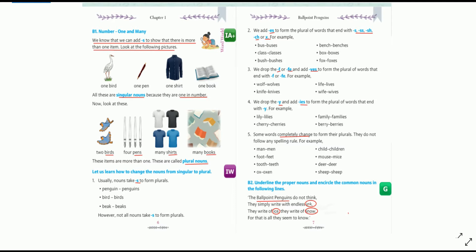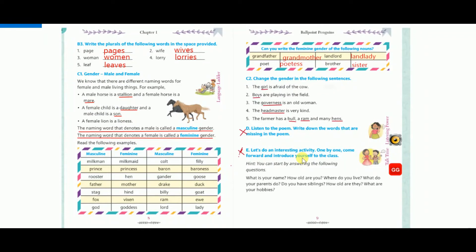Now let us come to page number 8, question B3: write the plurals of the following words in the space provided. Number 1 — page: the plural of page is pages, P-A-G-E-S; we just add S at the end. Number 2 — wife: wife ends with FE, so according to the rule, we drop FE and add VES. Write W-I-V-E-S — wives.